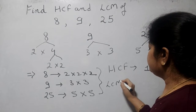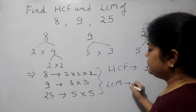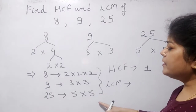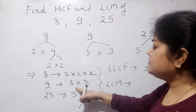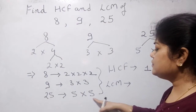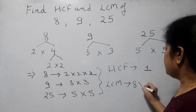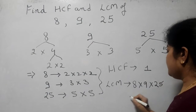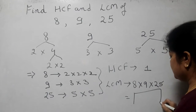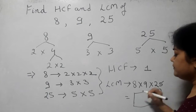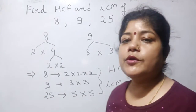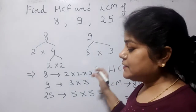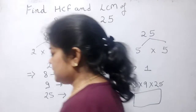Now for LCM — there is nothing common, so this is 8, this is 9, this is 25. So 8 into 9 into 25: when you multiply all three, we get the LCM. So this is a typical question. I am going to take some more examples in order to explain HCF and LCM.